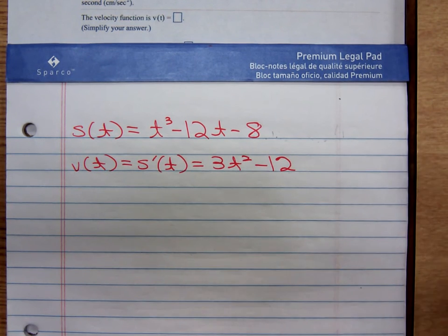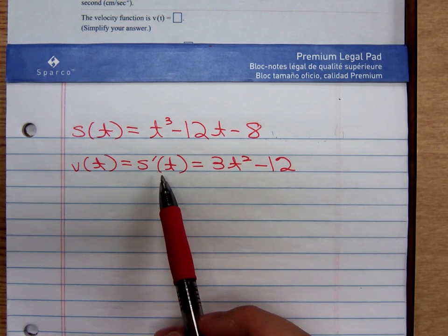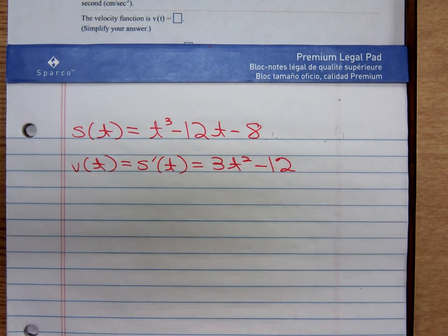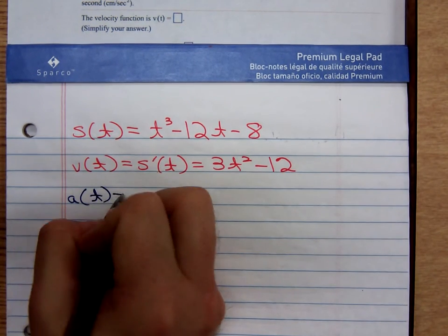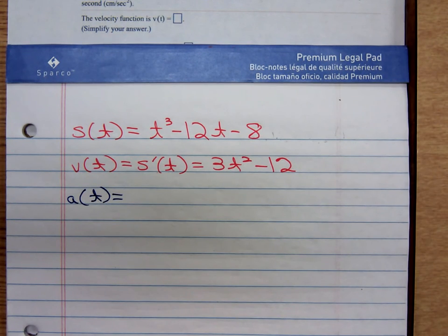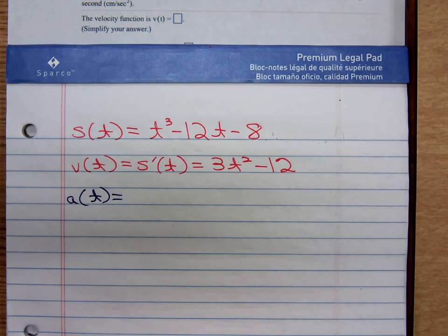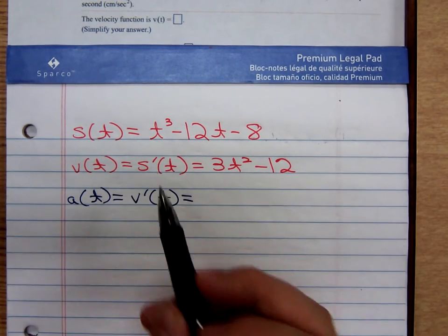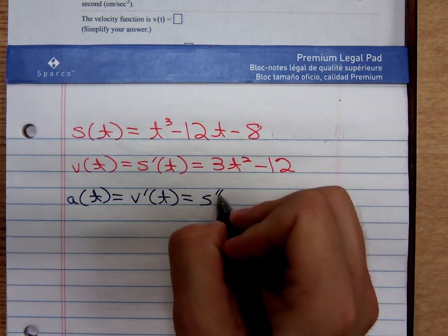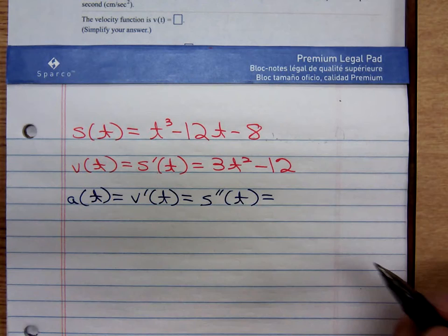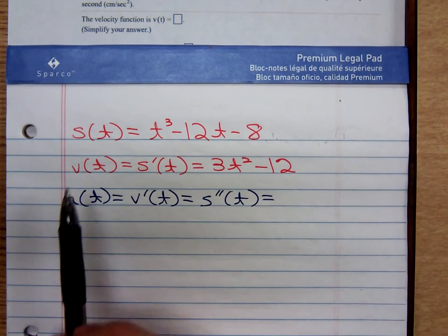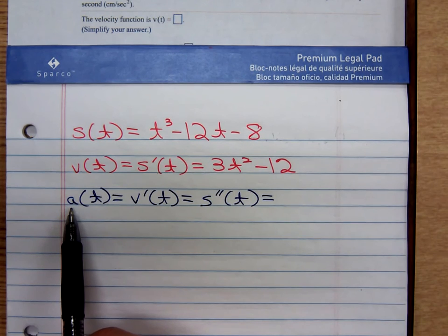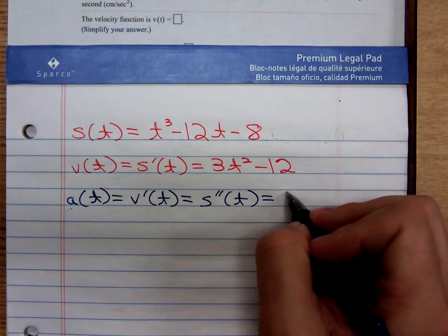Velocity is defined to be the rate of change of position; the rate of change is given by the derivative. Acceleration is defined to be the rate of change of velocity. That means we have to differentiate the velocity function, and in terms of the position function, that would be the second derivative. Velocity is the first derivative of position; acceleration is the second derivative of position. So, differentiating the velocity function, we get just 6t.